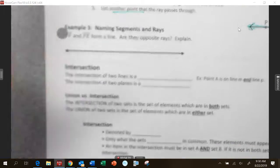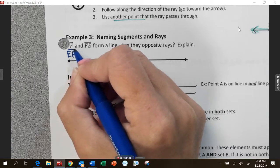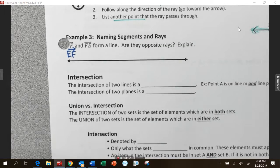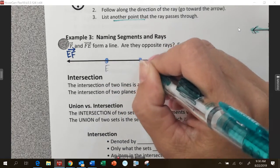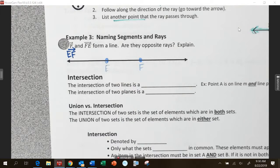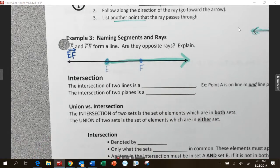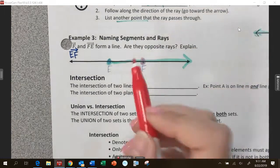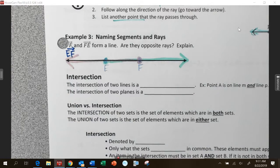All right. Example three. Part of it got cut off. So, that part that got cut off should say Ray ES. So, this says that Ray ES and Ray FE form a line. So, we're going to draw E and S. They form a line. Are they opposite rays? Here's Ray ES. Here's Ray FE. Yeah, you're right. So, opposite rays share the same endpoint.